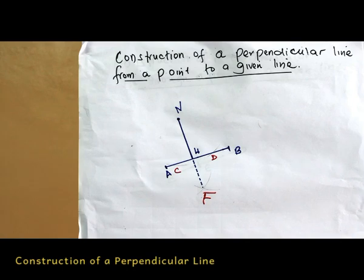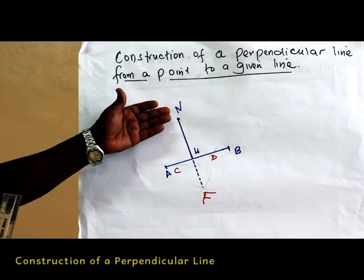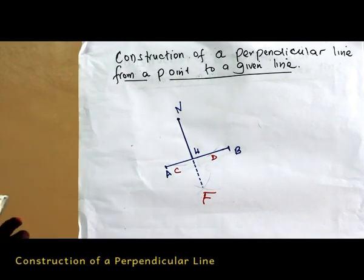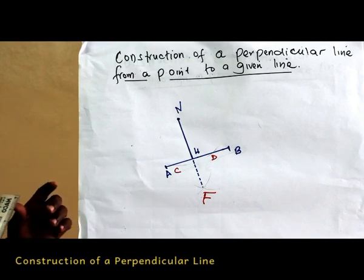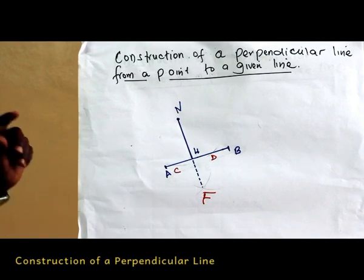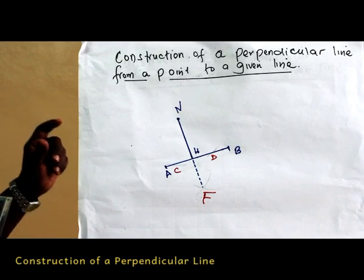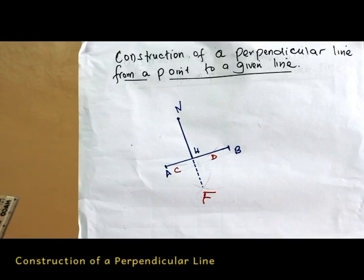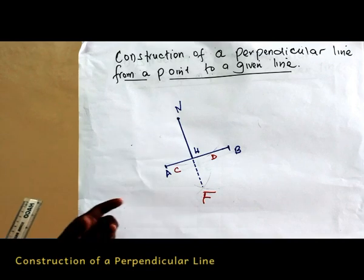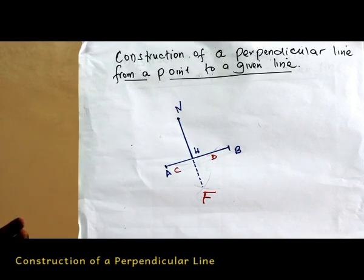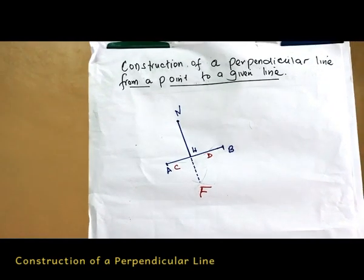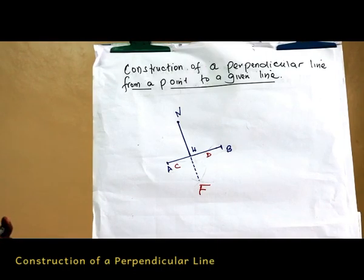NH is the required perpendicular line from point N to H. I've made it continuous because we are interested in the line from N to H. I've made this line broken because it's just part of the construction, not the perpendicular line required from N to H. Thank you.